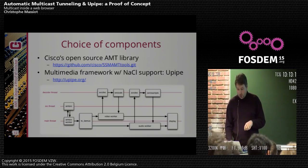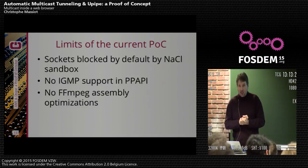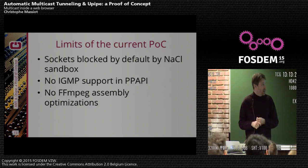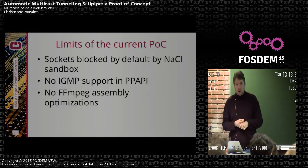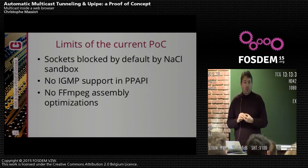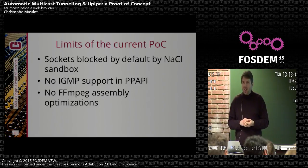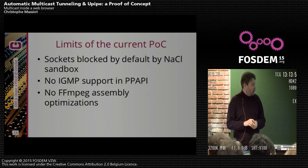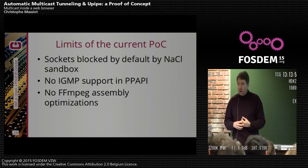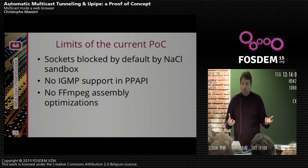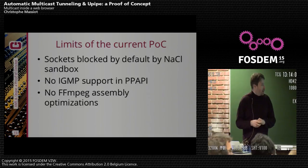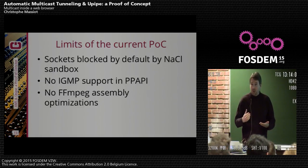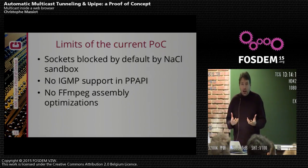The current POC works — I'll show a demo later. But there are a few annoying limits. The first is that sockets are blocked by default in Native Client. There is a Chrome flag to enable some socket support, but not enough for our case. For our case to work, you have to specify a command line switch to Chrome, which is not very practical. Also, the socket API in Chrome's sandbox doesn't have support for IGMP at the moment — there is a ticket opened in Chrome's issue tracker, but no IGMP support currently. So actually, AMT is the only thing that works in the plugin, which is an interesting workaround.